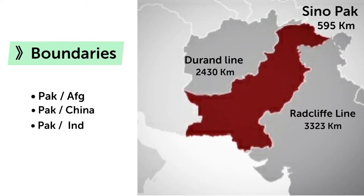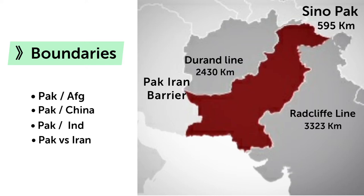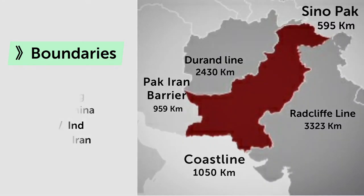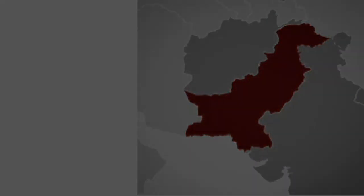The border of Iran and Pakistan is also called the Pakistan-Iran barrier, and the length of this border is 959 kilometers. The coastline is approximately 1050 kilometers.